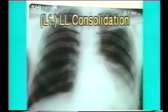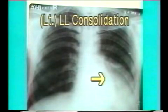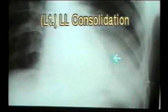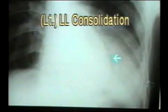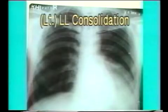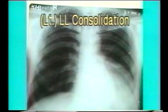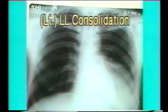This is an X-ray of the left lower lobe consolidation. Note the uniform opacity of the left lower zone. The heart border is seen and does not silhouette with the opacity, indicating that the consolidation is in the right lower lobe. There is no displacement of the mediastinum, so this is a consolidation of the right lower lobe due to lobar pneumonia.